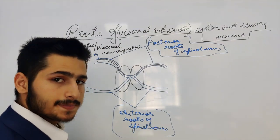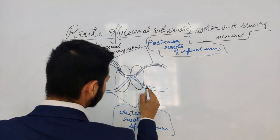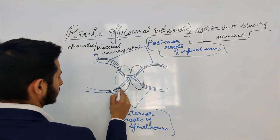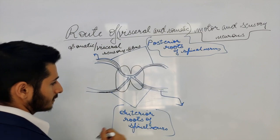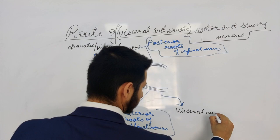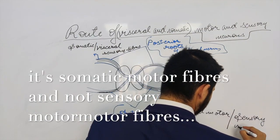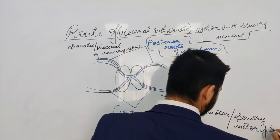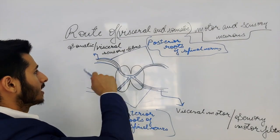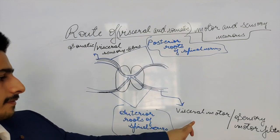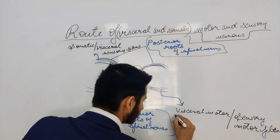The anterior roots of the spinal nerves also carry two kinds of fibers: visceral motor fibers and somatic motor fibers. The visceral motor fibers gathered in the anterior roots are the preganglionic fibers, not the postganglionic fibers.